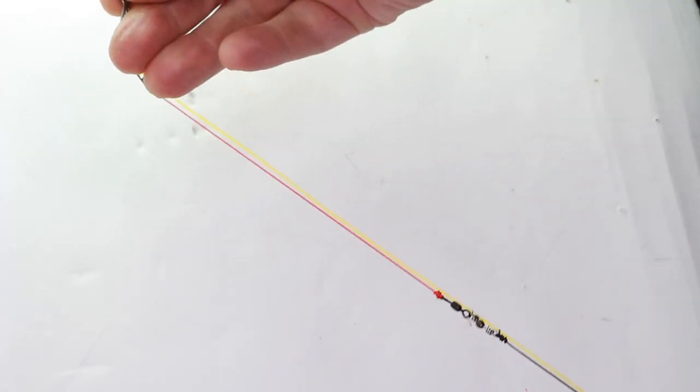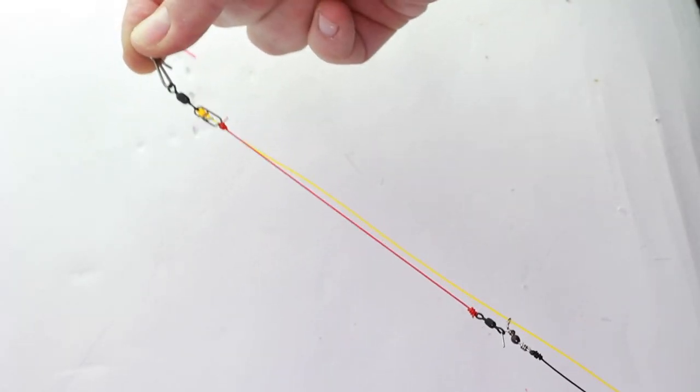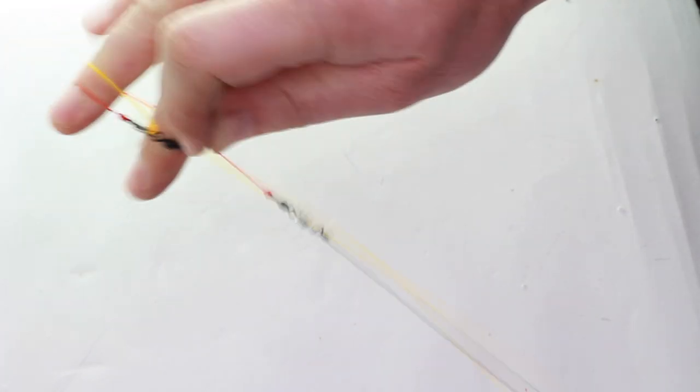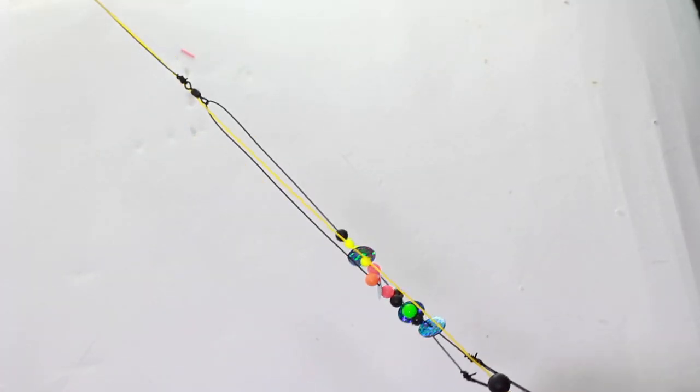That you've already got running up and down the line. And that way when the bait hits the water, the hook snood will slide off that cascade swivel, giving a nice long trace.